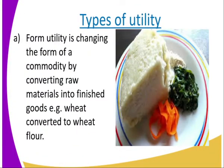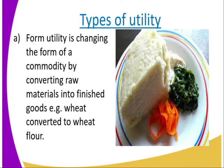Let us start by looking at form utility. Form utility is changing the form of a commodity by converting raw materials into finished goods. For example, wheat is converted into wheat flour — that is form utility. When I take the flour, cook it, and it is ready for consumption, that is also form utility. I have changed the flour into a finished commodity that you can eat.